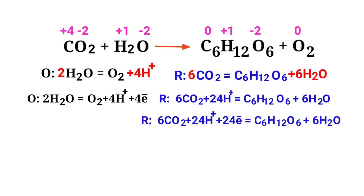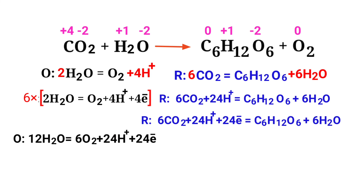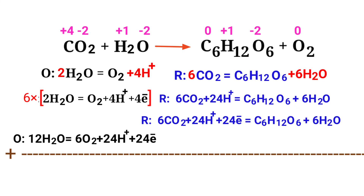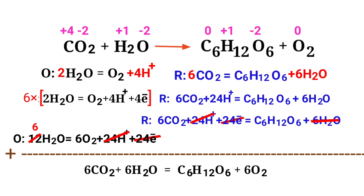The electrons lost in the oxidation half reaction must equal the electrons gained in the reduction half reaction. The oxidation half reaction has 4 electrons and the reduction half reaction has 24 electrons. To equalize them, multiply the oxidation half reaction by a coefficient of 6. Now add both reactions together and cancel the same terms on each side. The equation is now balanced in an acidic medium.